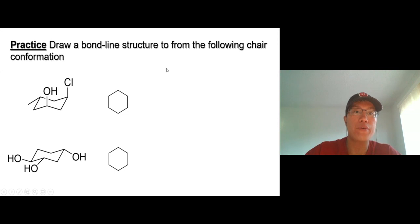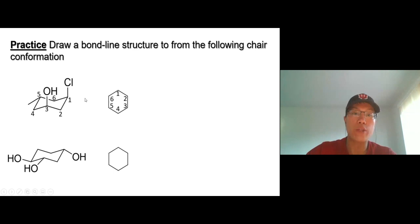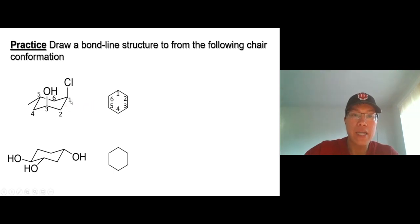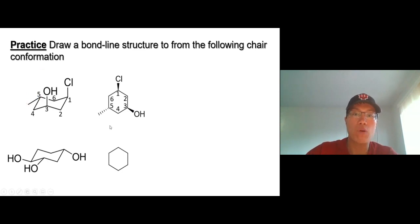Now we're going to draw a bond-line structure from a chair conformation — converting the chair back to bond-line structure. Always number the carbons first: one, two, three, four, five, six. The numbering has nothing to do with IUPAC — it just helps you keep track and compare structure to structure. Chlorine is pointing up — keep it up, wedge line. The hydroxyl group on carbon three is also up — keep it up. Very simple.